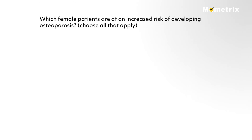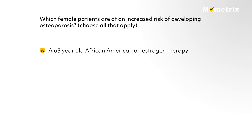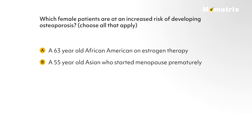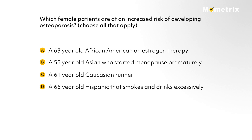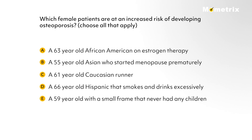Which female patients are at an increased risk of developing osteoporosis? Choose all that apply. A: a 63-year-old African-American on estrogen therapy. B: a 55-year-old Asian who started menopause prematurely. C: a 61-year-old Caucasian runner. D: a 66-year-old Hispanic that smokes and drinks excessively. Or E: a 59-year-old with a small frame that never had any children.